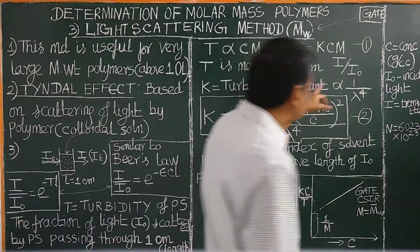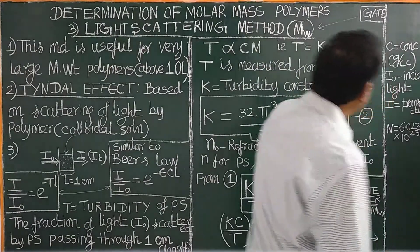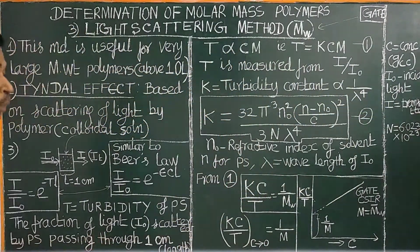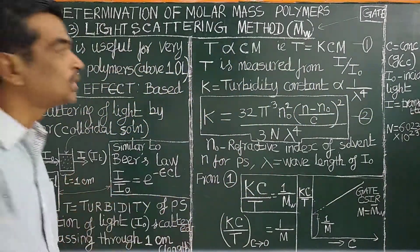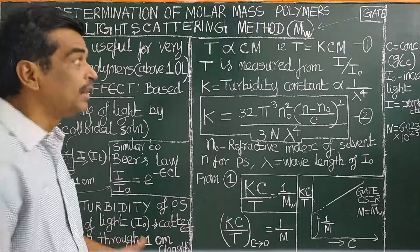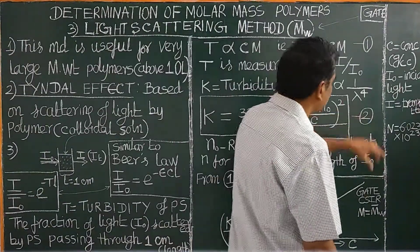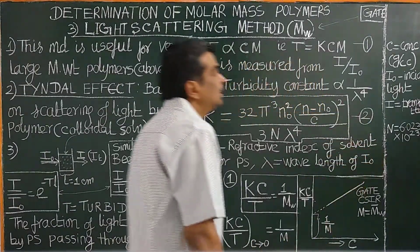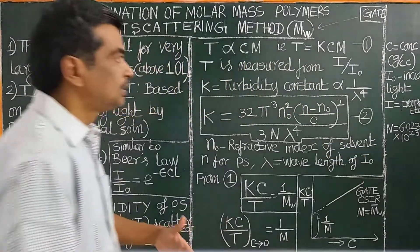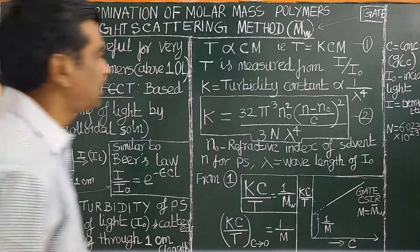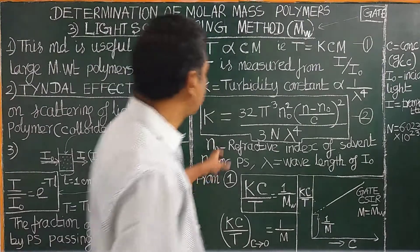This is similar to Rayleigh scattering. Blue light is more scattered than red light. Therefore, the sky is blue in color because of Rayleigh scattering, as you have already studied.